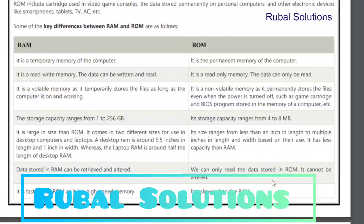Some of the key differences between RAM and ROM are as follows. RAM: It is a temporary memory of the computer. ROM: It is a permanent memory of the computer. RAM: It is read-write memory — the data can be written and read. ROM: It is a read-only memory — the data can only be read.